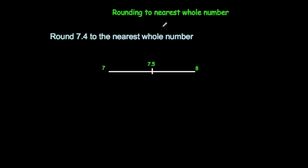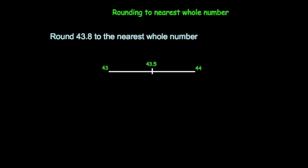In this video we're going to look at rounding numbers to the nearest whole number. So to round 7.4 to the nearest whole number, here we've got a number line with seven and eight, and 7.5 in the middle. 7.4 would be somewhere here on the number line. As you can see, 7.4 is closer to seven than it is to eight, so 7.4 to the nearest whole number would be seven.